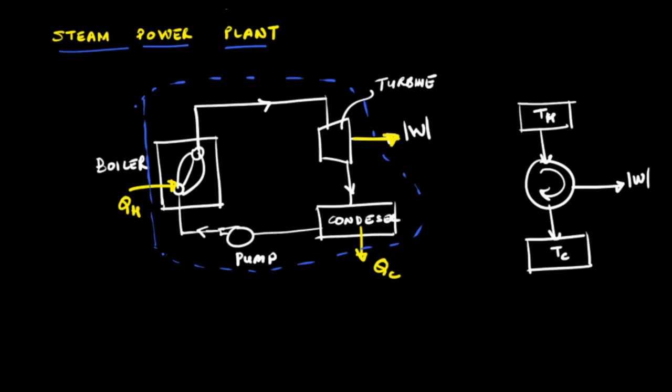The term heat engine is sometimes used in a broader sense for any device that produces work through heat transfer or combustion, even if it doesn't operate in a thermodynamic cycle. For example, an internal combustion engine is sometimes called a heat engine, although strictly speaking it doesn't operate in a thermodynamic cycle. In our discussion of the second law we will consider heat engines that strictly operate on a thermodynamic cycle.